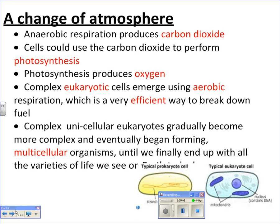Anaerobic respiration produces carbon dioxide, and once carbon dioxide was around — I'm talking a few hundred million years — other cells could use it to perform photosynthesis. Photosynthesis produces free oxygen, another molecule that had never been around before. Once enough oxygen had been produced, the atmosphere started to become a lot more like it is today. The oxygen allowed complex eukaryotic cells to emerge using aerobic respiration, which is very efficient — 36 ATP. These eukaryotes could now become more complex, even forming multicellular organisms, until we finally end up with all the varieties of life we see on Earth today.